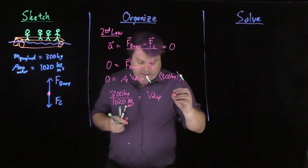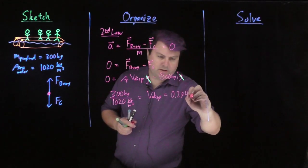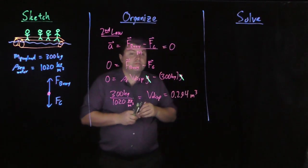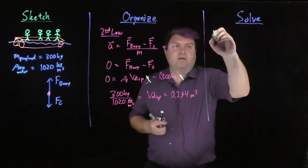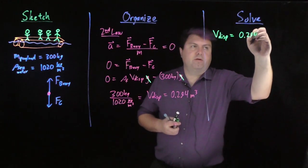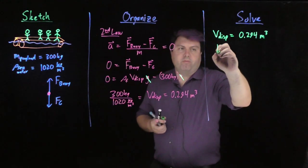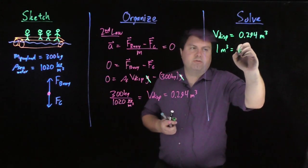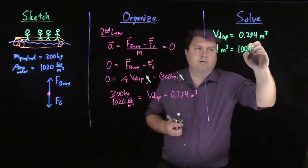So if we look at that, that volume displaced is going to be 0.294 meters cubed. So to solve for this, now we have our volume displaced is 0.294 meters cubed, and we know that one meter cubed is equal to 1,000 liters.